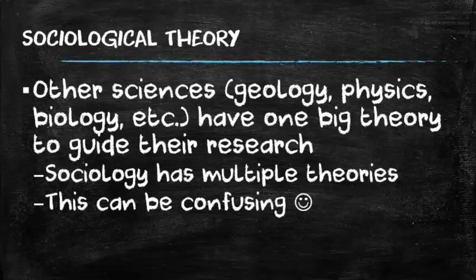Now, in a lot of other sciences, you only have one overarching theory that guides your research. For a physicist, you have the Big Bang Theory. The Big Bang Theory guides your research and sets a foundation for how you do future research. It's easy in some other sciences because there is that one big overarching theory that everybody agrees on. Well, sociology can't be that easy — of course not. We have multiple competing theories that we have to know well enough to know which one is going to be the best fit for a particular research project.